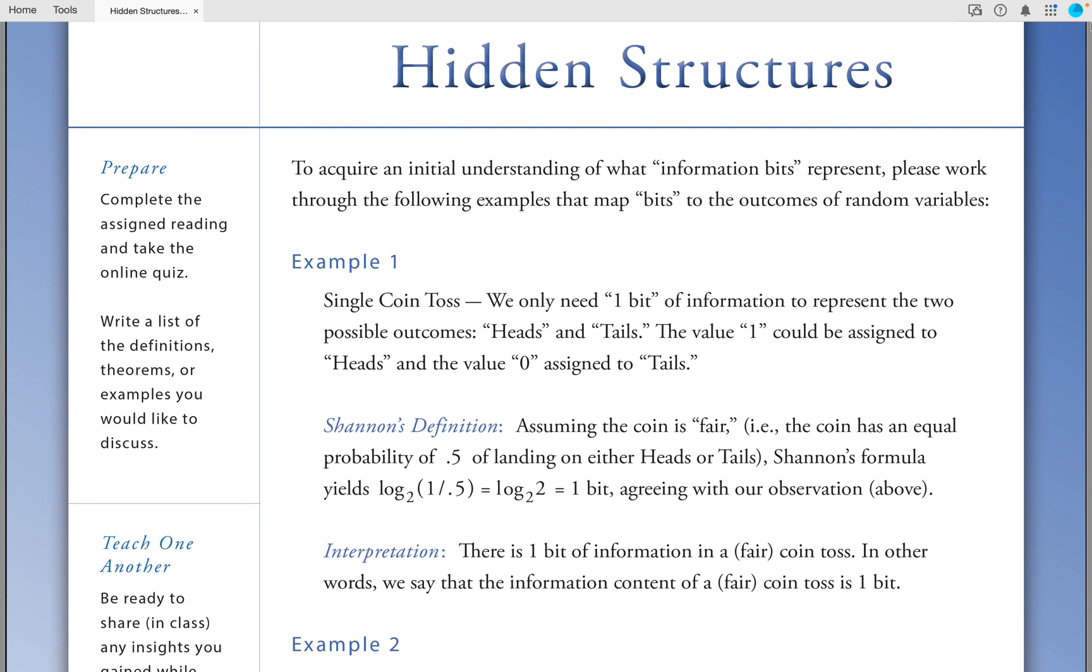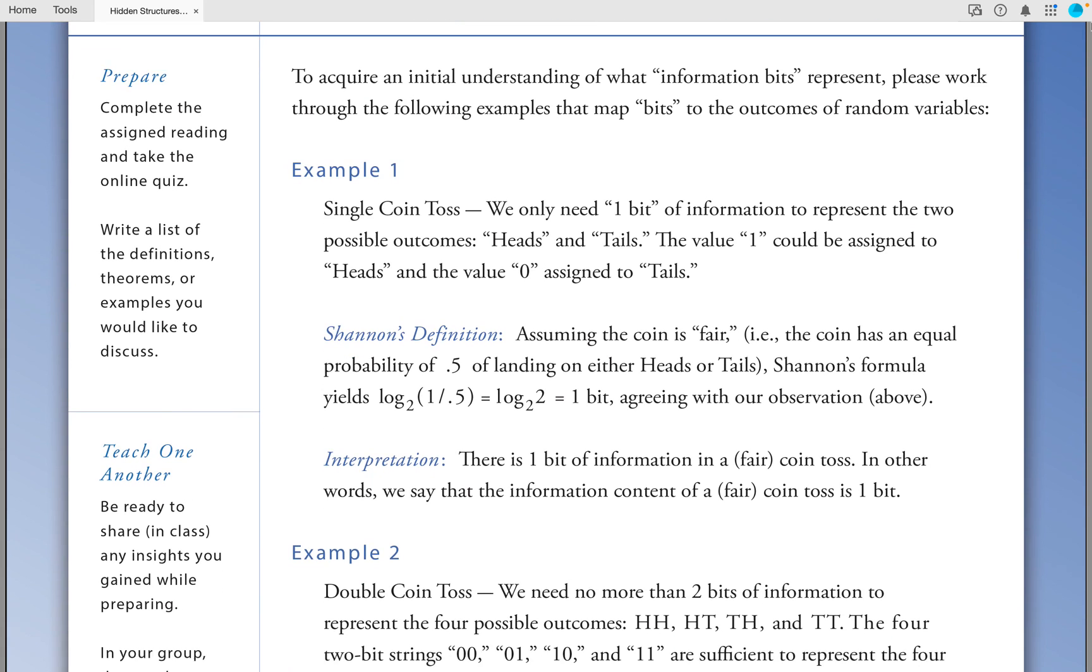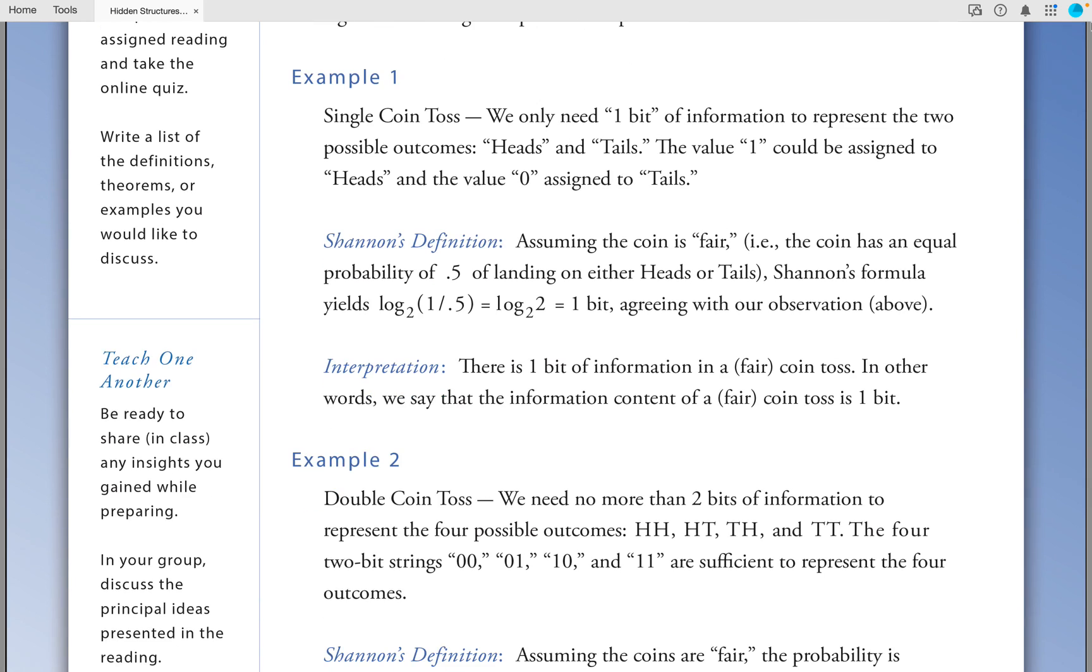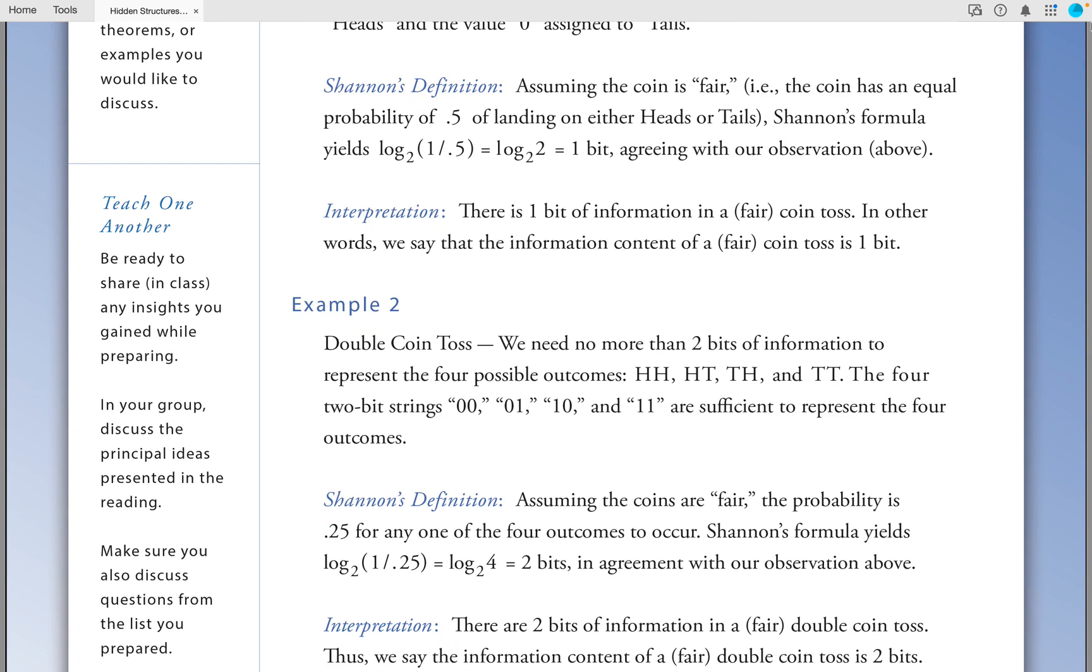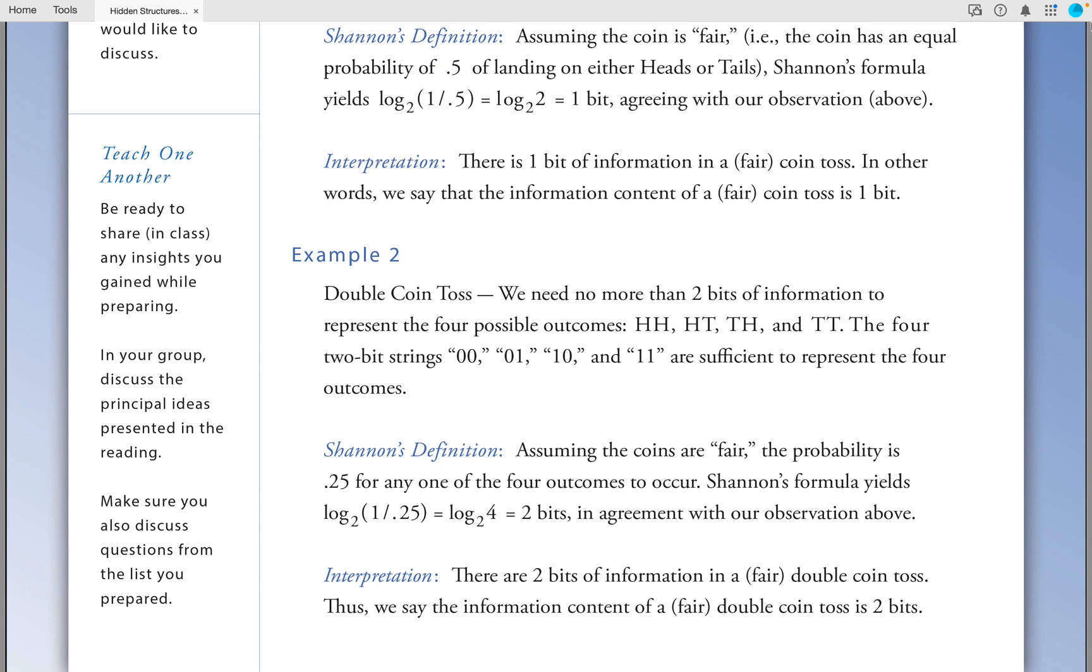Interpretation: There is one bit of information in a fair coin toss. In other words, we say that the information content of a fair coin toss is one bit.